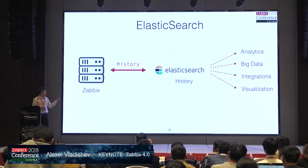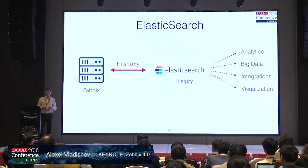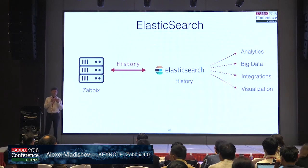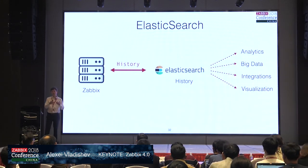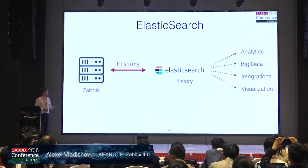Elasticsearch may not give you a huge performance benefit per se, but it gives you horizontal scalability. You can add additional nodes and distribute the load on your historical database across those nodes. This is a very nice option to have in Zabbix.